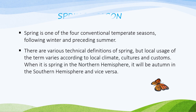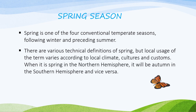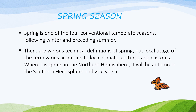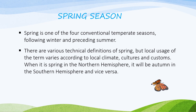Spring is one of the four conventional temperate seasons, following winter and preceding summer. There are various technical definitions of spring, but local usage of the term varies according to local climate, cultures, and customs. When it is spring in the Northern Hemisphere, it will be autumn in the Southern Hemisphere and vice versa.